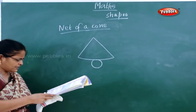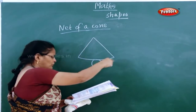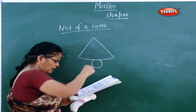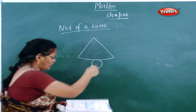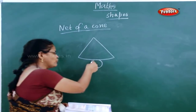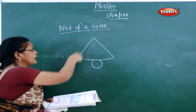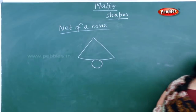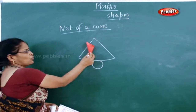Once again I will repeat. What you have to do is join both the sides of the portion of the circle in such a way that the arc of the circle falls on the boundary of the circle attached at the bottom. Like this you will get a cone.